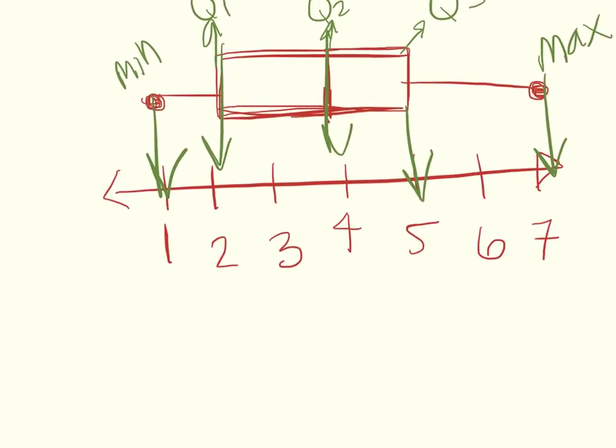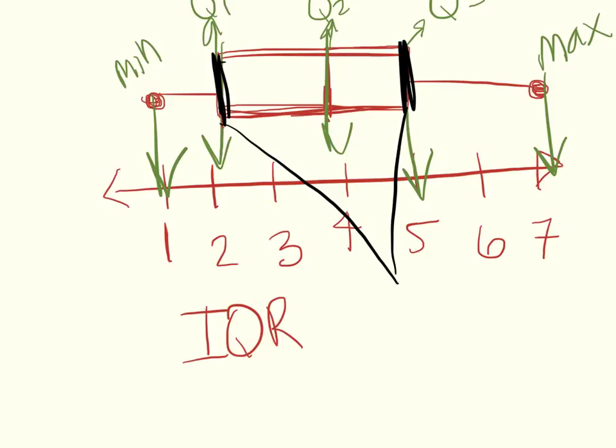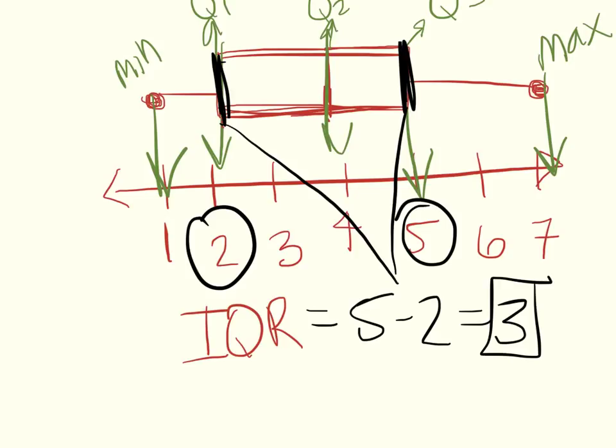One more thing that you guys might be asked to find is this thing called an IQR. That means it's an interquartile range. Say that with me: interquartile range. And these are your quartiles right here. We're looking for the range, and the range of this is 5 minus 2. So 5 minus 2 would be 3. It's asking you for the range inside this box, so you're gonna go three spaces, which you have: one, two, and three spaces in this box. So interquartile range is concerned with your first quartile minus your third quartile.